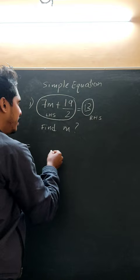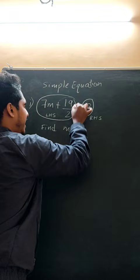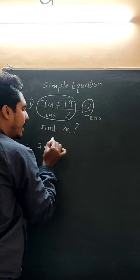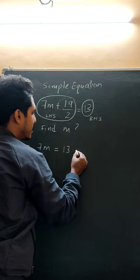The first step is: to find the value of m, the term 19 by 2 needs to be taken to the RHS side. So 7m stays as it is, is equal to 13 as it is, and plus 19 by 2 when taken to the RHS becomes minus 19 divided by 2.